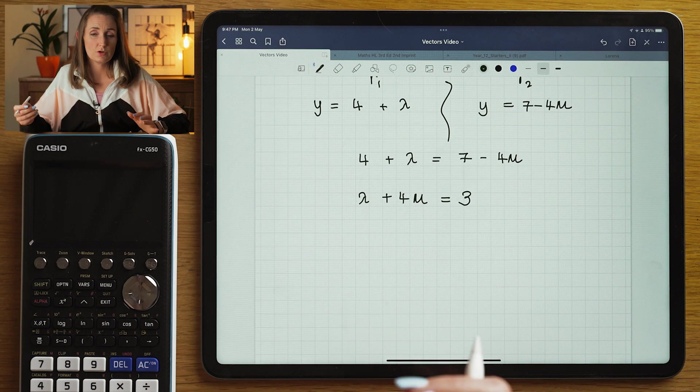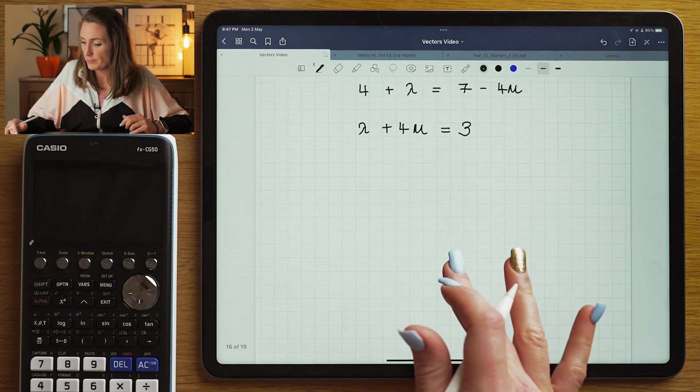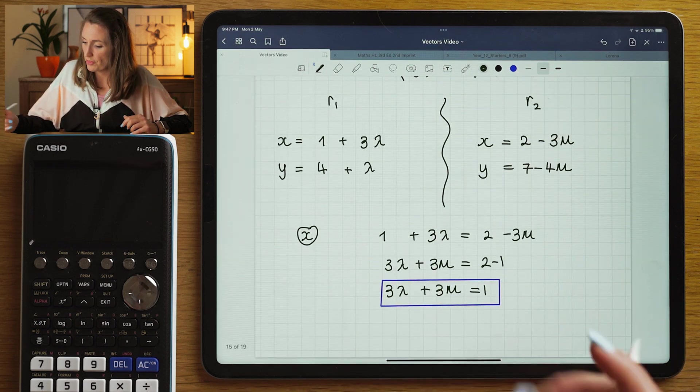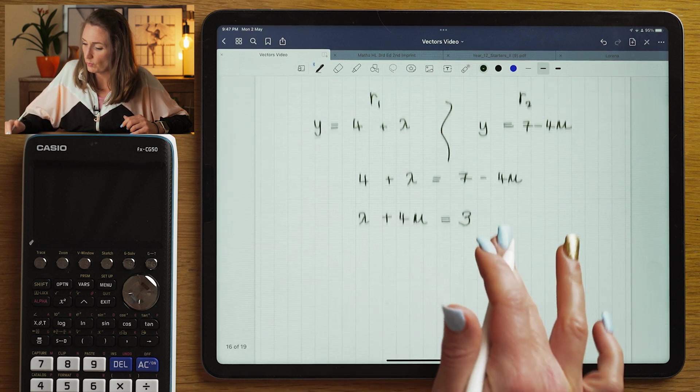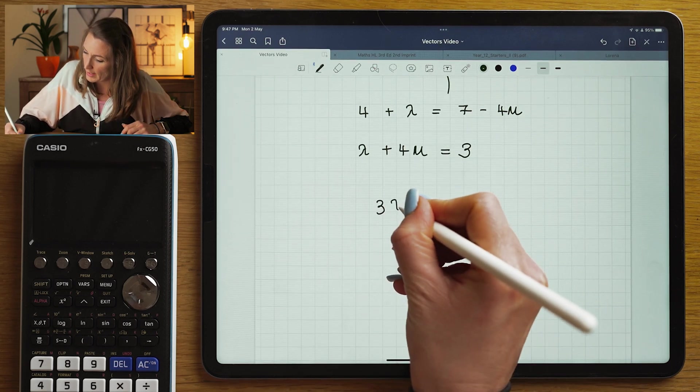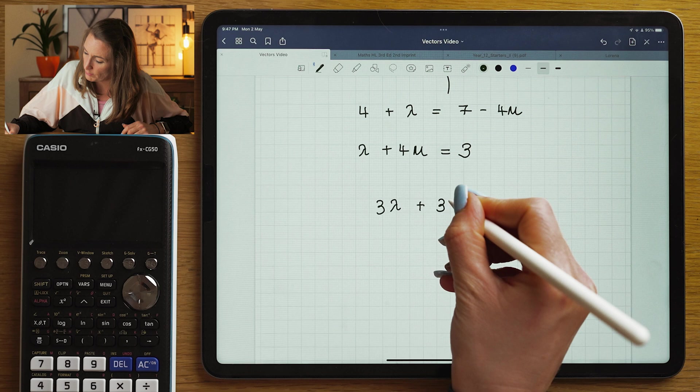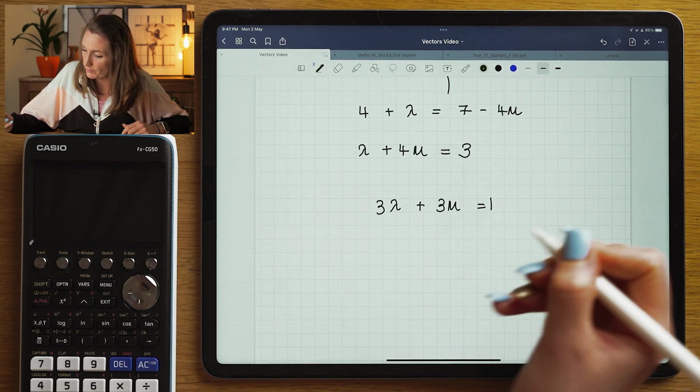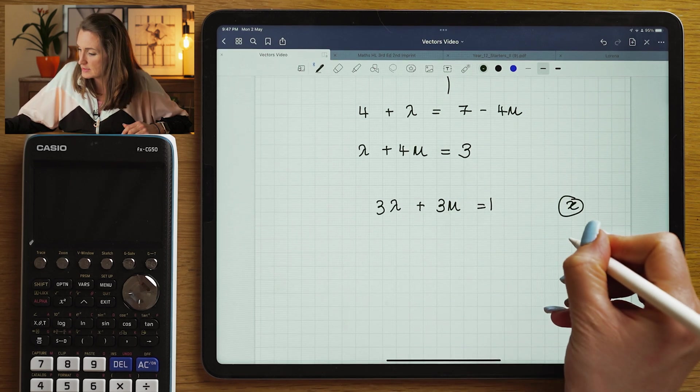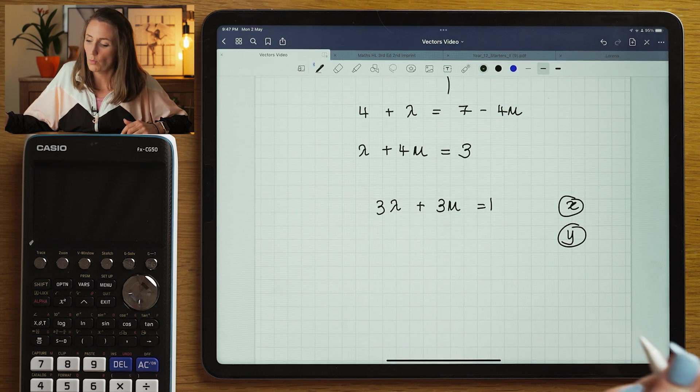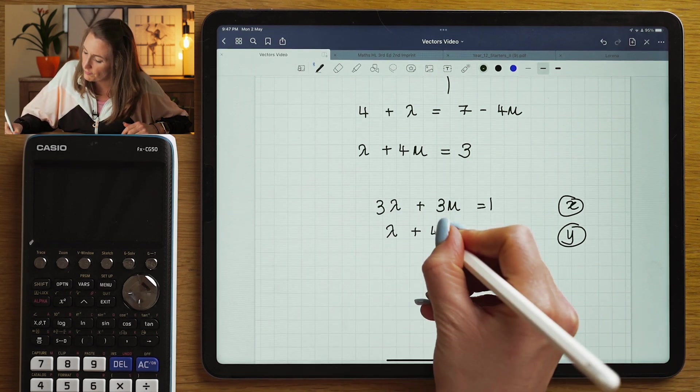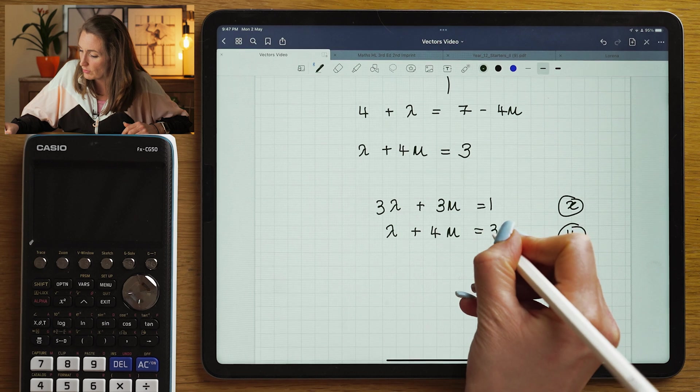Now I have two equations and two unknowns. I can form a simultaneous equation. So my first equation was 3 lambda plus 3 mu is equal to 1. That came from equating the x's. And I had another equation from the y's, which was lambda plus 4 mu is equal to 3.